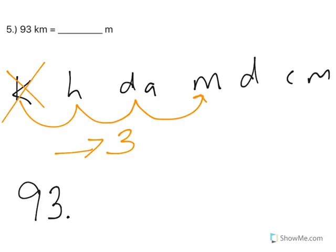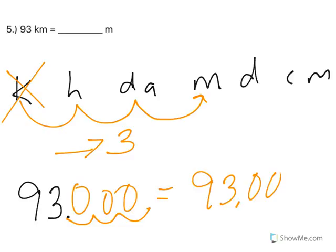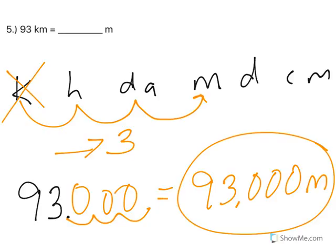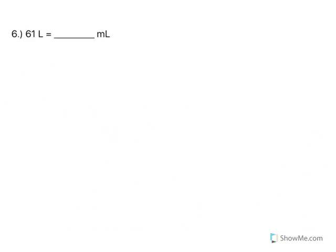I start with just a 93 with a decimal at the end. And one, two, three goes three humps. And I end up with 93,000 meters. You notice that kilometers to meters and kilograms to grams, exactly the same process because of the decimal system.